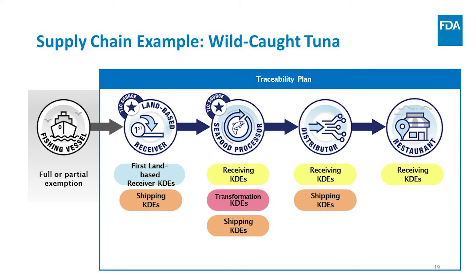Additionally, all entities covered by the rule are required to maintain a traceability plan. During an inspection or in the case of an outbreak investigation, the traceability plan will help FDA understand a firm's traceability records. The traceability plan must include a description of the procedures used to maintain the required records, a description of the procedures used to identify foods on the FTL that you manufacture, process, pack, or hold, a description of how you assign traceability lot codes if applicable, and a point of contact for questions regarding your traceability plan and records. The traceability plan has additional requirements if you grow or raise a food on the food traceability list other than eggs. However, those requirements are not relevant to anyone in this supply chain.